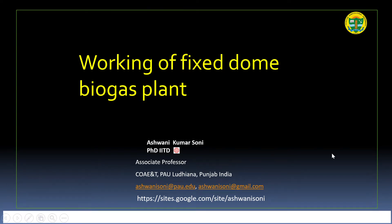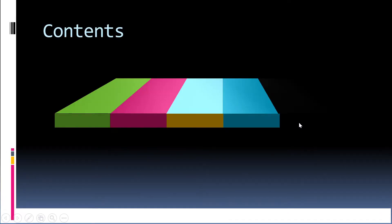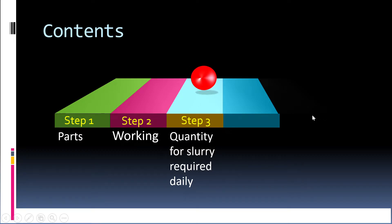Today we will discuss working of a fixed dome biogas plant. We will first see its different parts, then study its working, and then we will calculate quantity of slurry required for running a biogas plant.